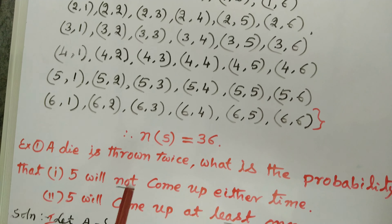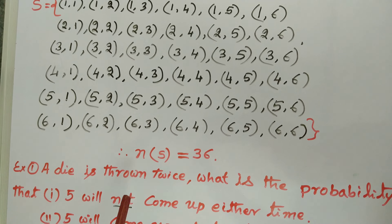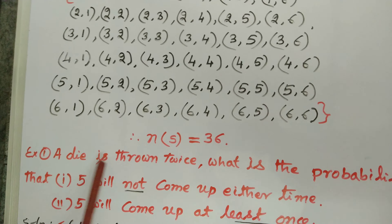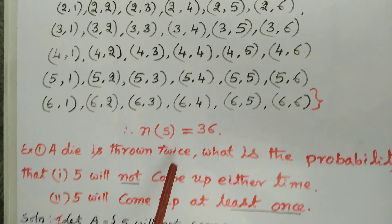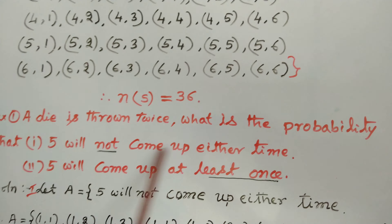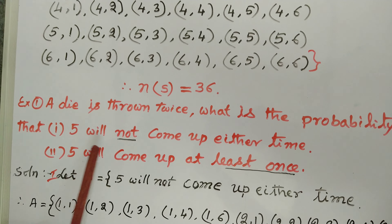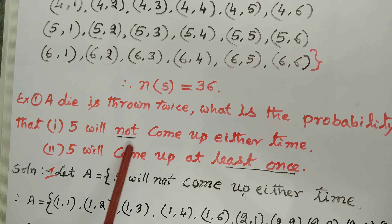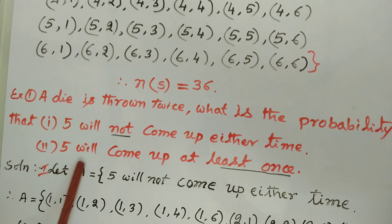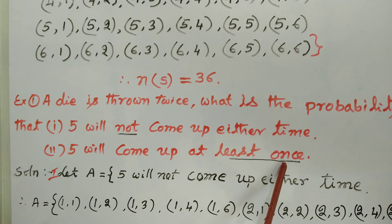Now, by using this idea, we can solve problems. First problem: a die is thrown twice. What is the probability that — number one: five will not come up either time; number two: five will come up at least once?